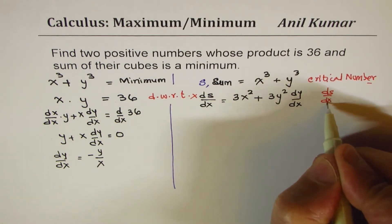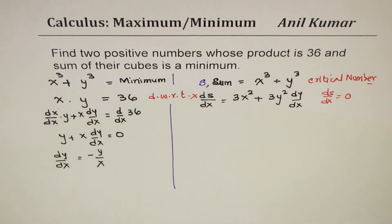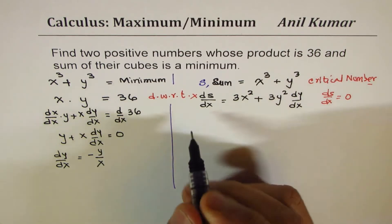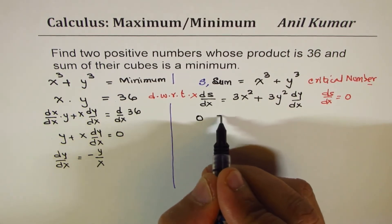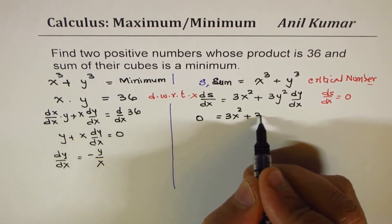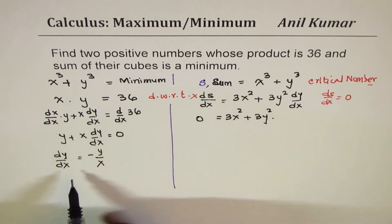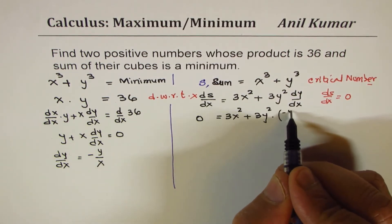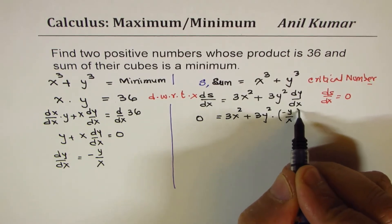Now for a critical number, this derivative should be zero, right? So we'll equate ds/dx to zero. So the first derivative we are equating to zero, so we get 0 = 3x² + 3y² and dy/dx we just found as -y/x, so we'll write this as -y/x.